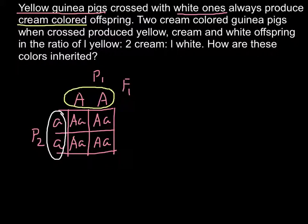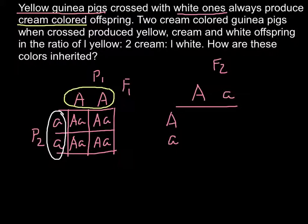The question is: if we cross this F1 generation with each other, what are we going to get? This is the F2 generation — the cross of the F1 progeny. We set up capital A, small a on this side and capital A, small a on the other side.